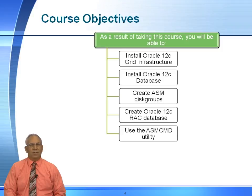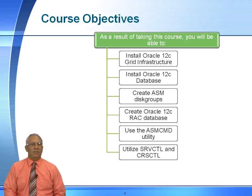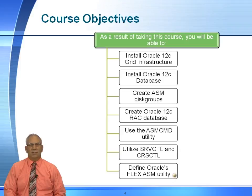which is basically the ASM command line utility, enabling you to create directories and create aliases. We will utilize the SRVCTL utility, commonly referred to as server control, as well as the CRSCTL utility. And we will look at the definition of Oracle's Flex ASM environment, which is brand new to Oracle 12C RAC.